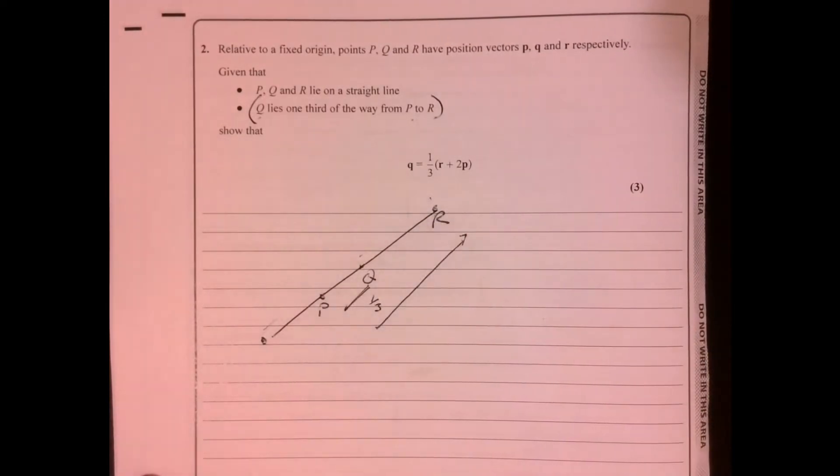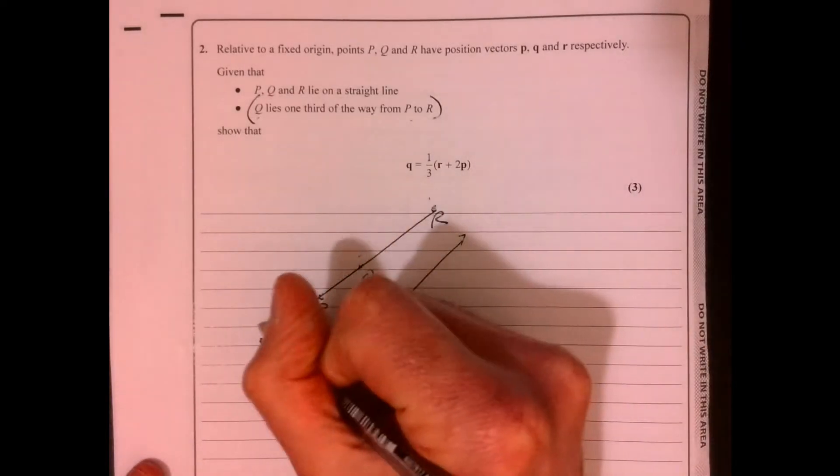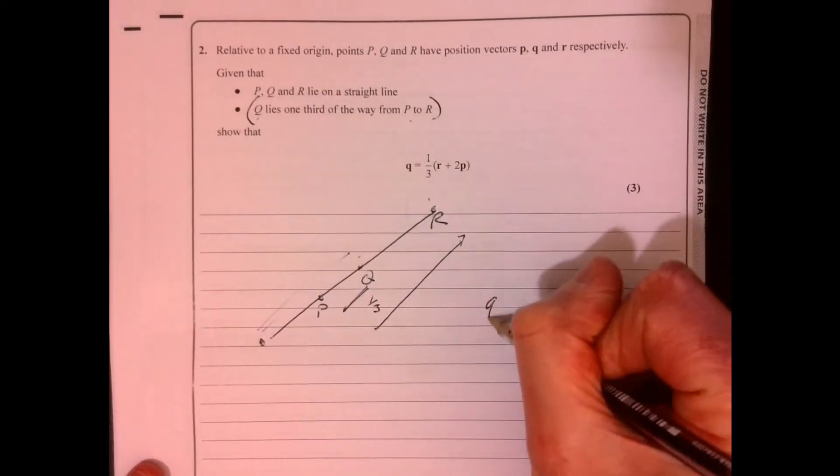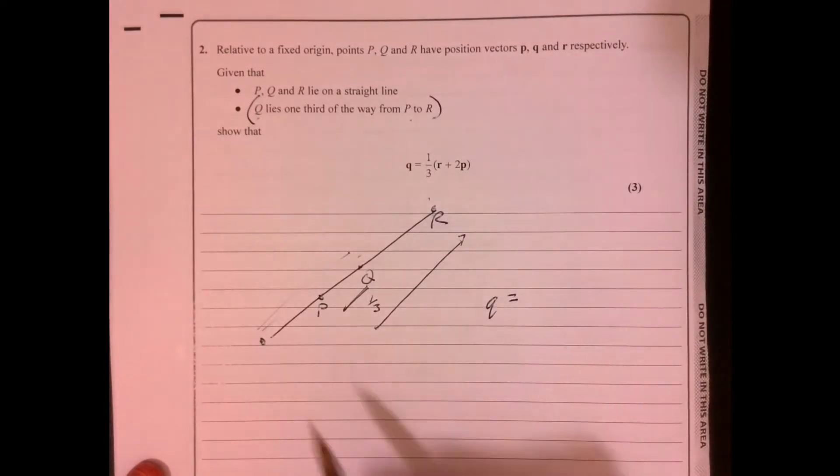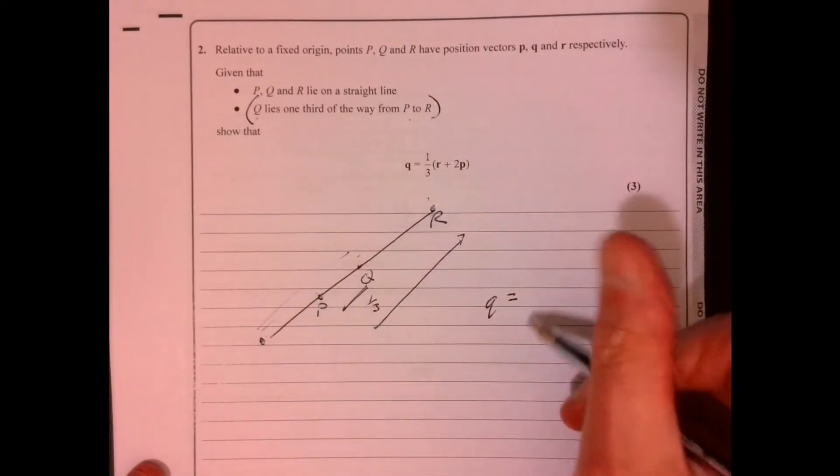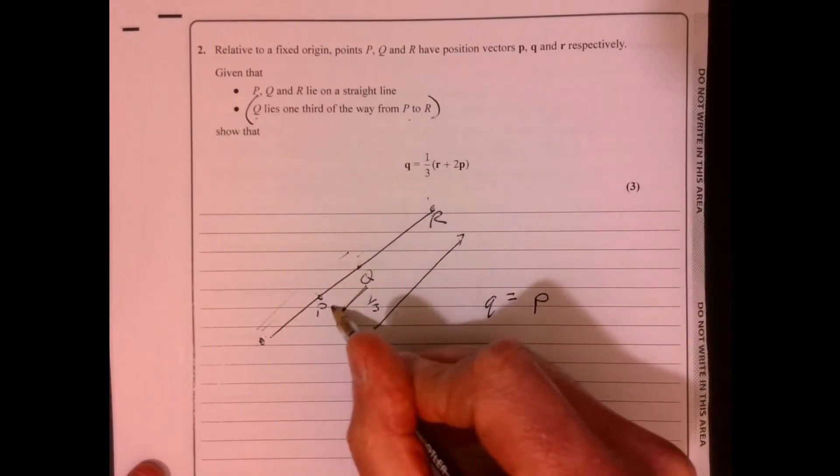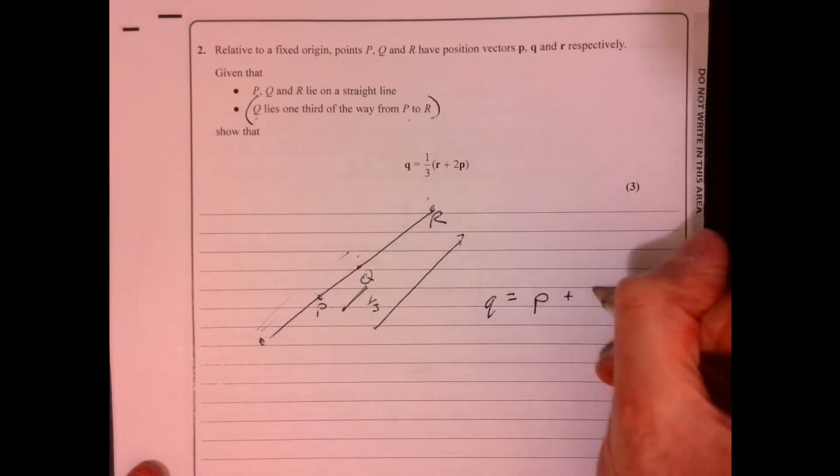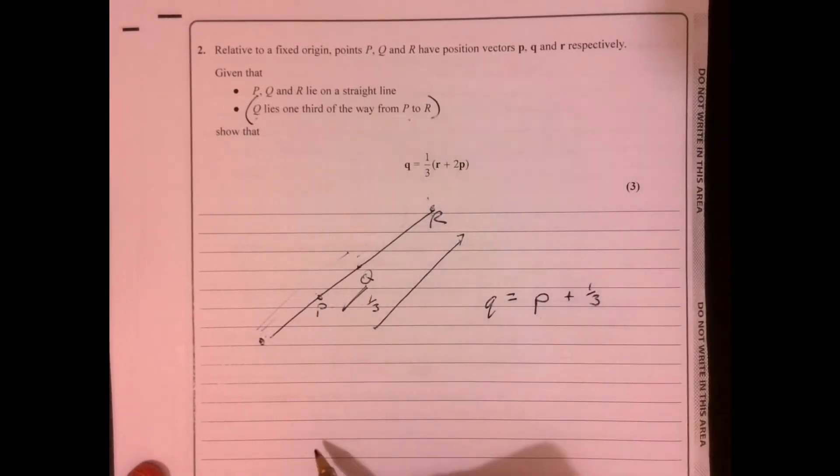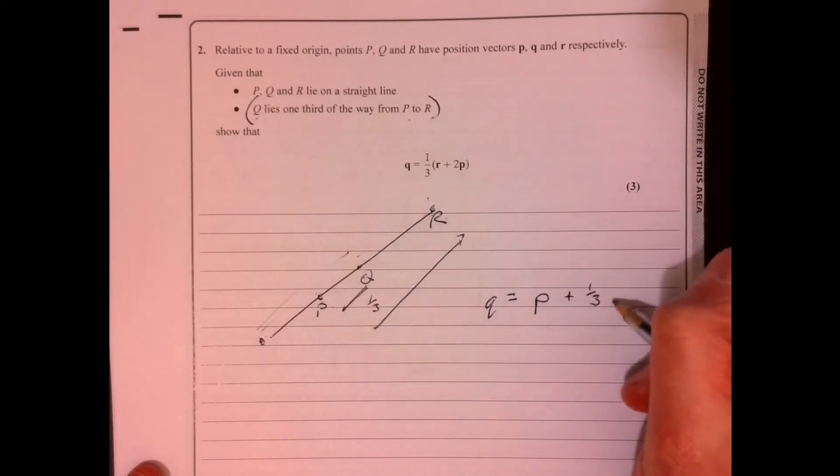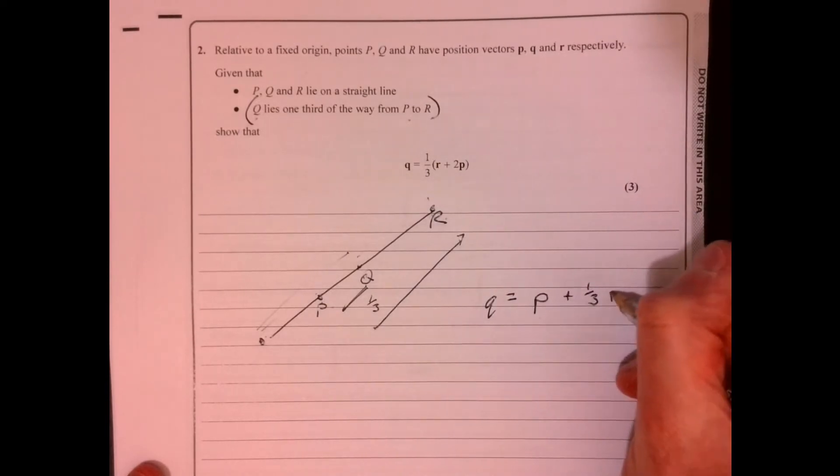So think about how all this goes together. So this is vector Q. We can say Q is equal to P plus one third of PR. That's one third of PR.